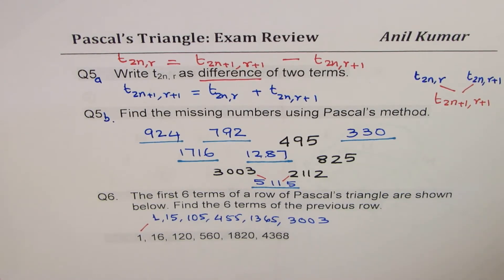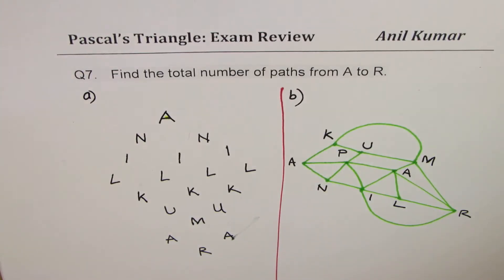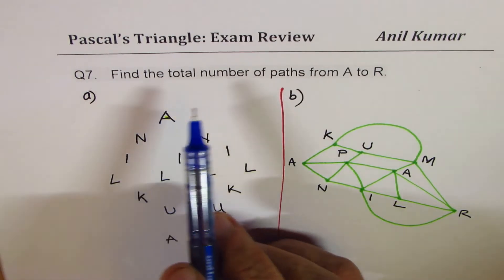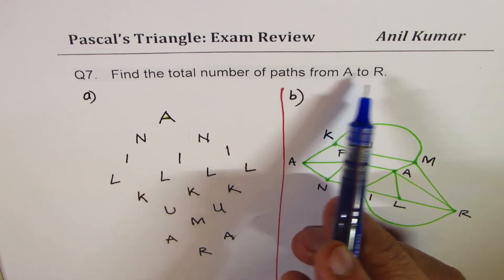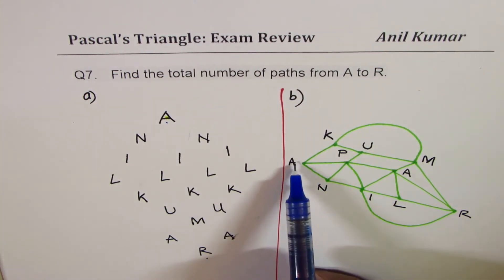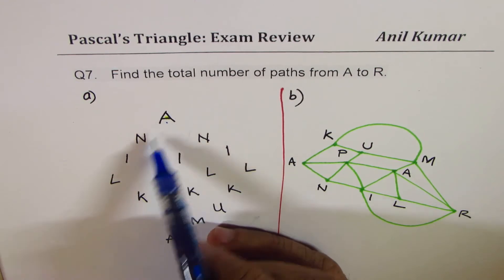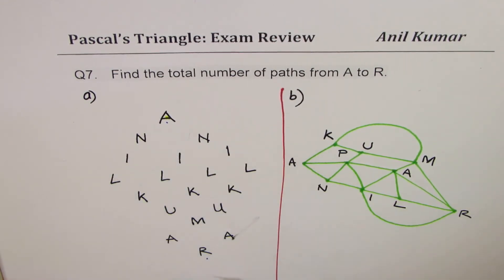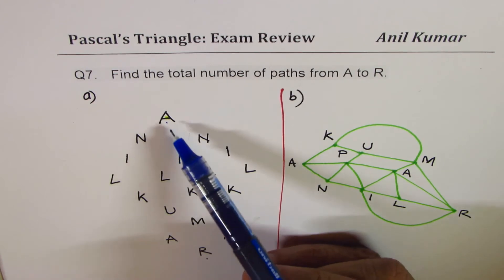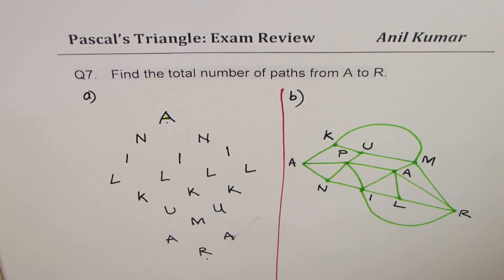So like this, we can actually get the series from the previous row. Now let's move on and do two more questions. Now these are based on the routes. So find the total number of paths from A to R. That means from here to R. From A to R. So I've written my name, Anil Kumar here. And you'll find total number of ways in which you can move from A to R in these two ways.